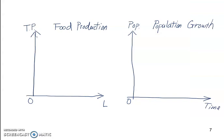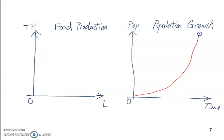If the population is growing the same exponential way, we can put this on a graph. On the right-hand side, the vertical axis is population and the horizontal axis is time. We would expect population to grow in a curve where not only is it increasing, but the growth rate is also accelerating — it grows faster and faster.